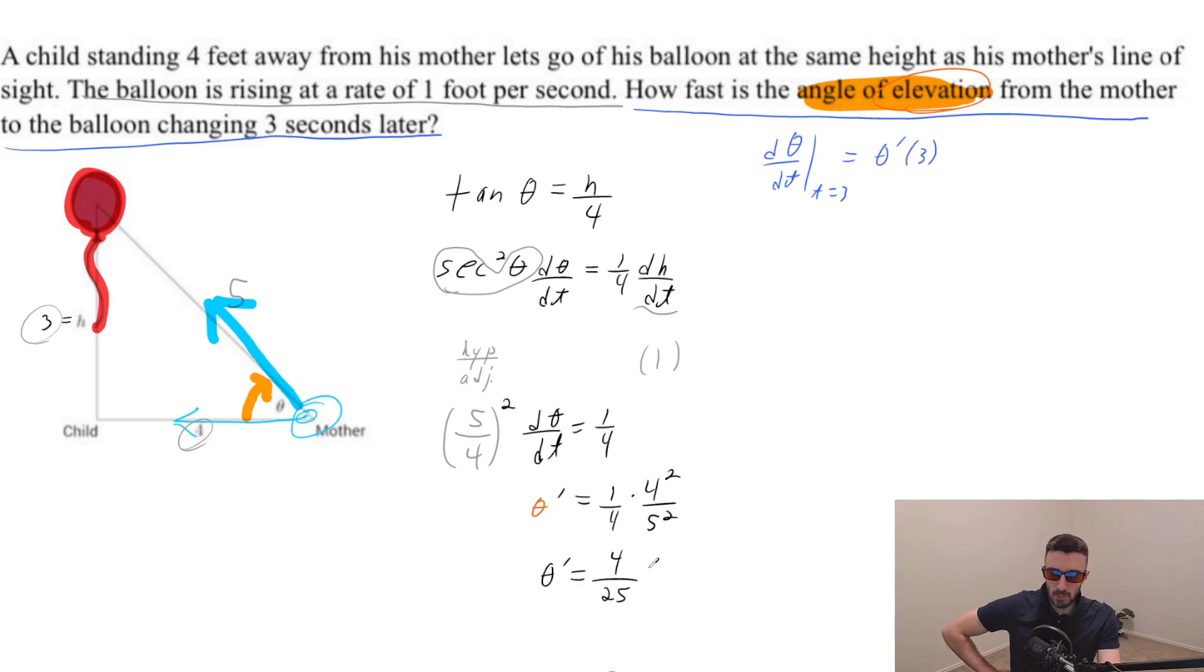And if you wanted to put a couple of units, you would say it's four over 25 radians per second. And there you go. We are done. See ya.